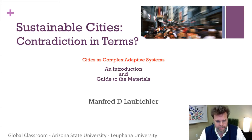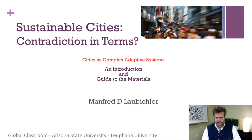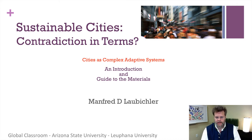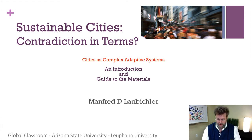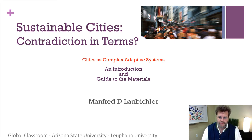Welcome to today's topic: cities as complex adaptive systems. Complex adaptive system theory is a way to look at, as the name suggests, complex systems, and it emphasizes systems-level properties. As you might imagine, cities are a prime example of complex adaptive systems. In order to understand this more deeply, let's think about what a complex adaptive system could be.